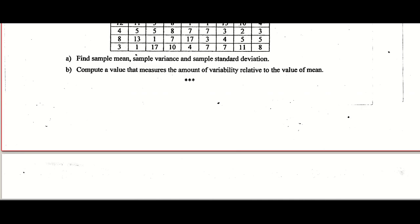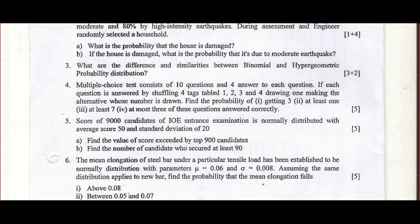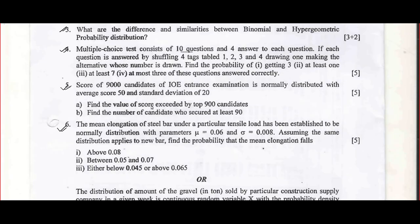Let's go to other question papers also. You can look at questions 3, 4, 5, 6 — binomial, binomial numerical, normal distribution, and again normal distribution. So 20 marks like that.